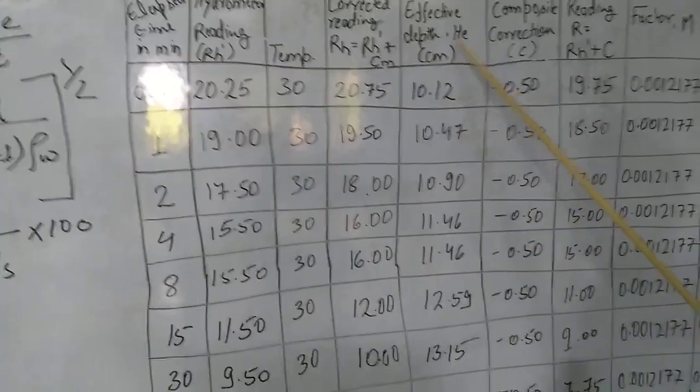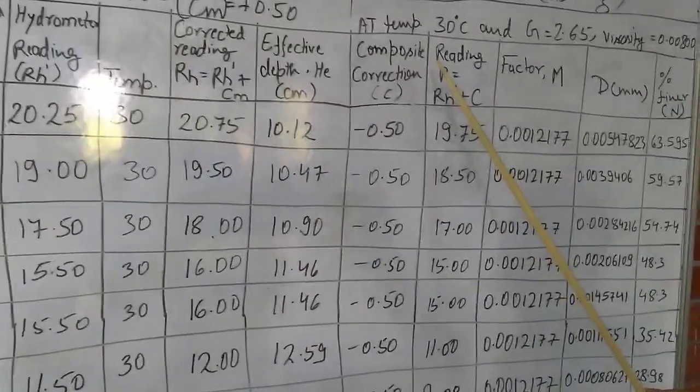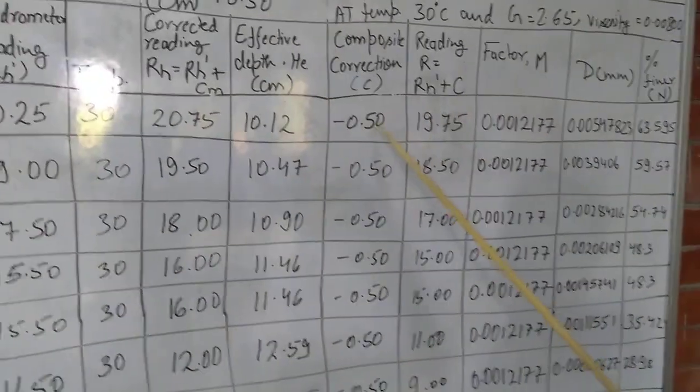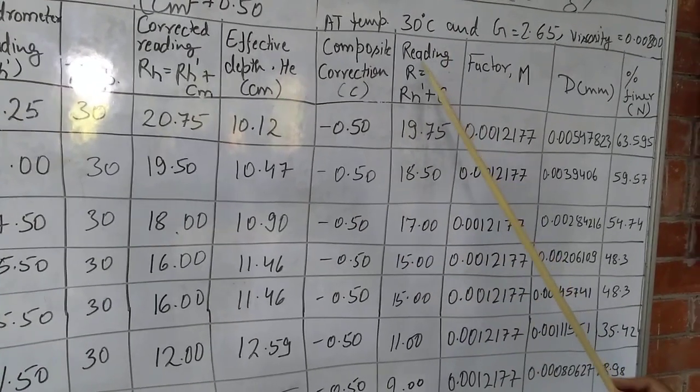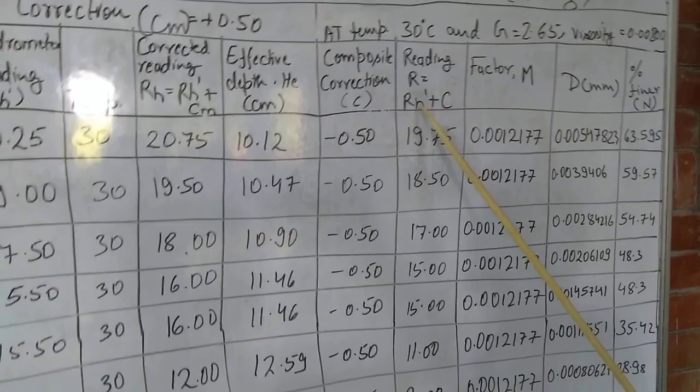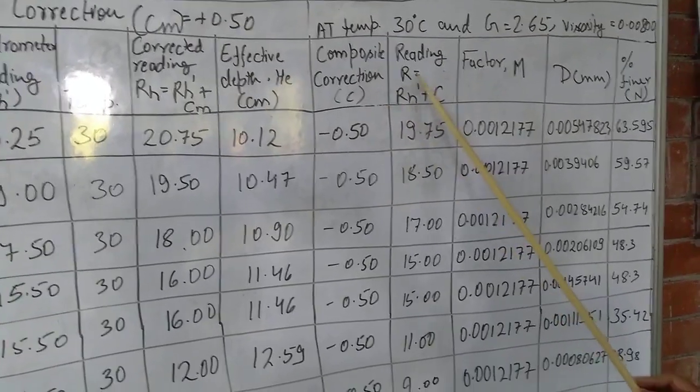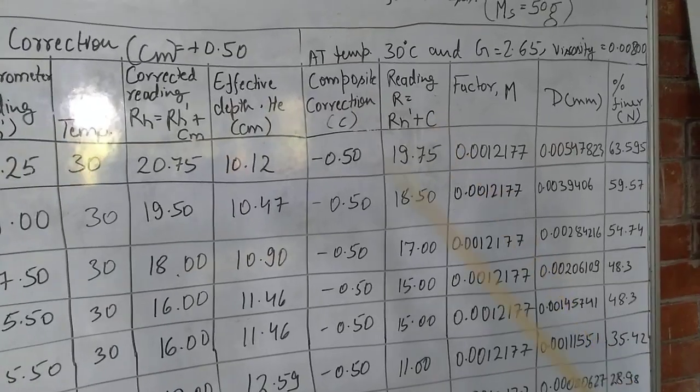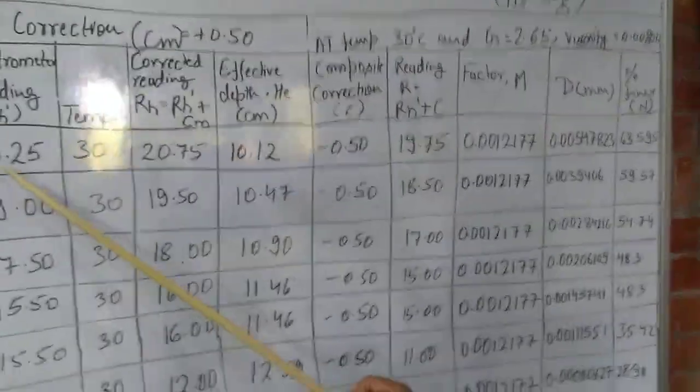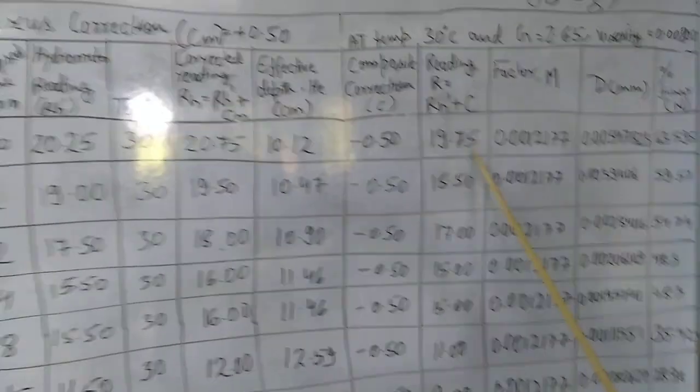This value we can calculate, and for our soil suspension, suppose the composite correction is minus 0.5. In that case, what will be the actual reading? The actual reading is the hydrometer reading which you have taken in the soil suspension plus composite correction. Composite correction you are going to add here: 20.25 minus 0.5, this will come 19.75.